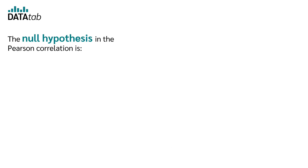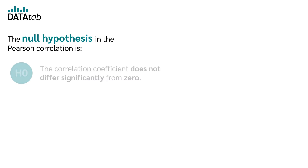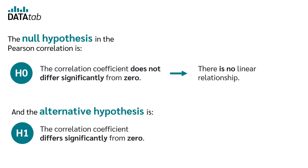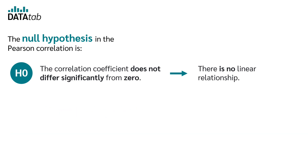The null hypothesis in the Pearson correlation is: the correlation coefficient does not differ significantly from zero — there is no linear relationship. And the alternative hypothesis is: the correlation coefficient differs significantly from zero — there is a linear relationship.